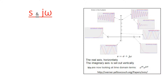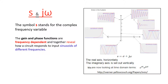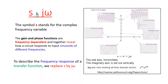Whenever we want to find the frequency response at various frequencies, instead of using the full s-domain we move to the imaginary axis only — meaning we set α = 0, or equivalently replace s with jω. This concept is important: the symbol s stands for the complex frequency variable, and the gain and phase functions are frequency-dependent. They reveal the circuit response to input sinusoids of different frequencies. To describe the frequency response of a transfer function, we replace s with jω.